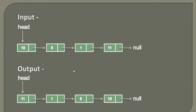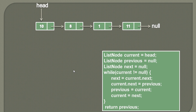Let's see this algorithm through a demo. Here we see a singly linked list having four nodes: 10, 8, 1, 11, and the head points to the first node. In order to reverse this singly linked list, here is the algorithm and we'll see how it makes the list reverse.